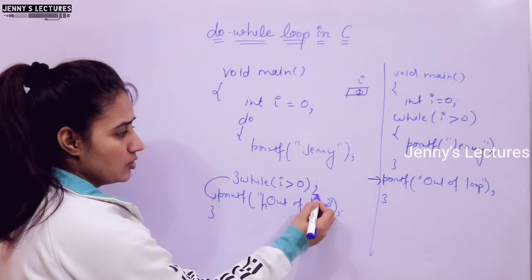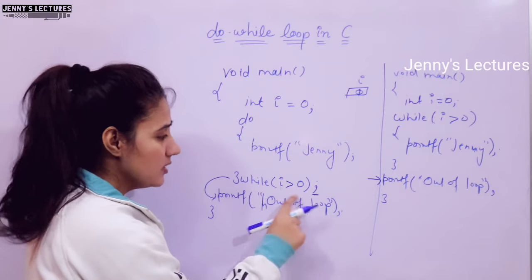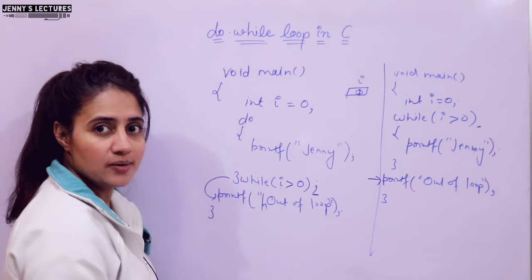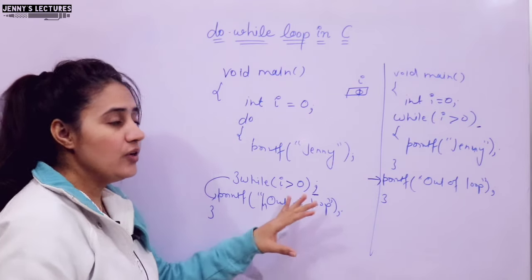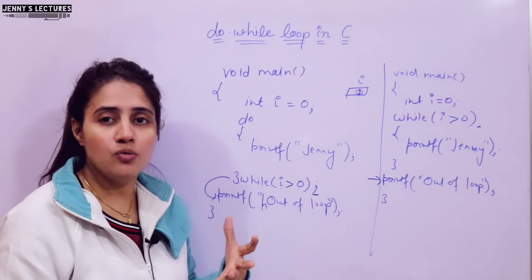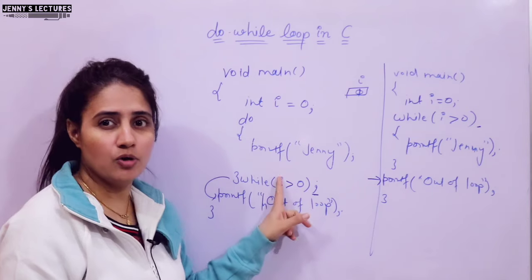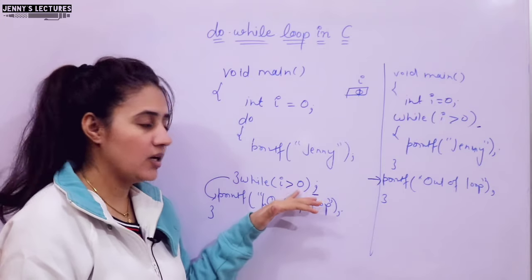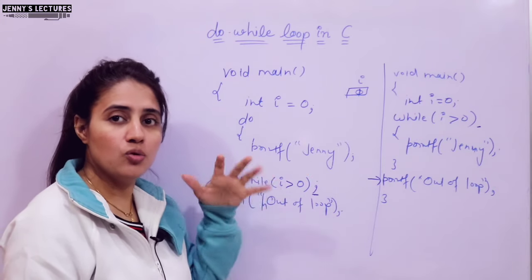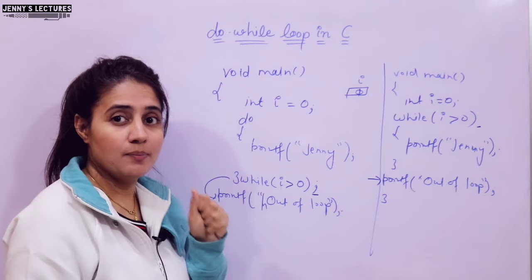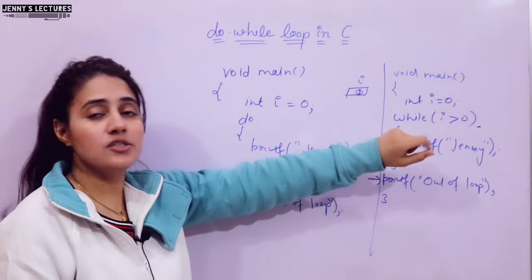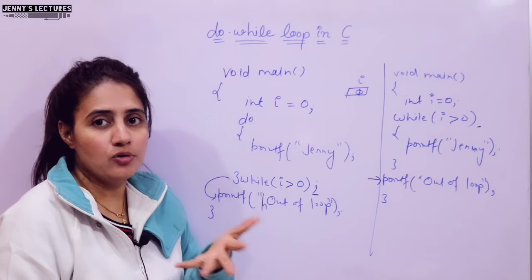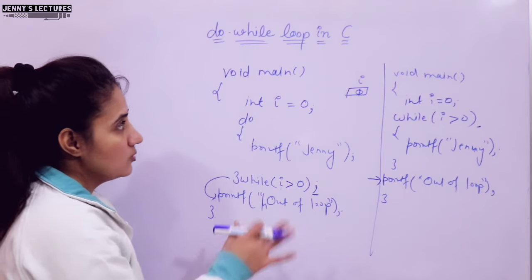That is why while is called an entry controlled loop and do-while is an exit controlled loop. A second difference is that in do-while we write a semicolon after the while statement, whereas in a regular while loop we do not write any semicolon — if you write one there, it gives an error. Use do-while when you want to execute the body of the loop at least once without checking the condition first. If you want to test the condition first, use for loop or while loop.